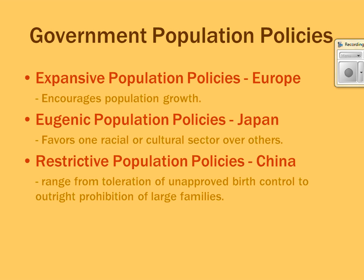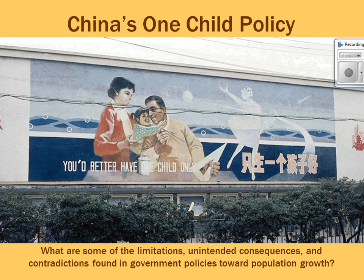India, unlike China, doesn't have a communist government mandating family size, so they can only encourage education. The government provides free clinics offering birth control, sterilization, and family planning services. There are still preferences for male children in India as well. This propaganda poster from China illustrates the one-child policy — displayed across the country to enforce that restrictive population policy.